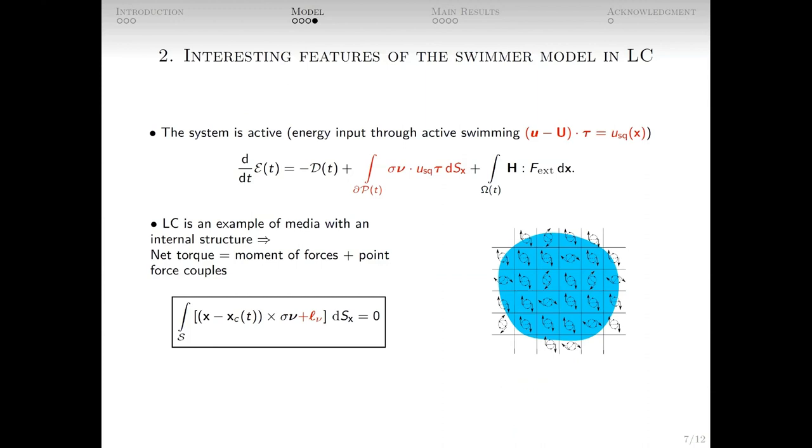There are two distinguishing features of the model. First, the system, or more precisely, the swimmer, is active. That is, there is an energy input coming from the ability of the swimmer to swim autonomously. We can write the energy relation. Here, E is the total energy of the swimmer and liquid crystal, term D is positive and denotes the dissipation of energy. The red term is the energy input rate due to the swimmer. The last term corresponds to external torque. Note that the red term is the boundary integral and stress sigma is a nonlinear expression of Q and its derivatives. It leads to challenges in obtaining a priori bounds.